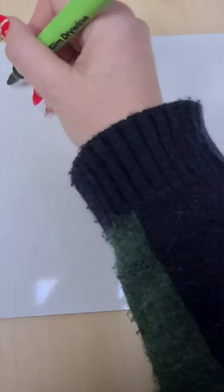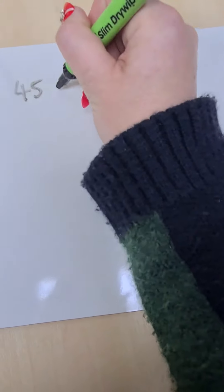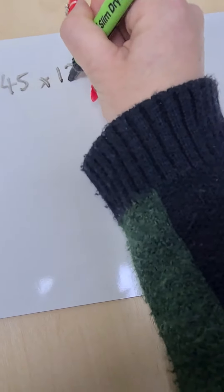I'm going to complete a multiplication using the expanded grid method today. This will include two digits times two digits or a larger number. Let's start with the number 45 and we're going to multiply it by 12.